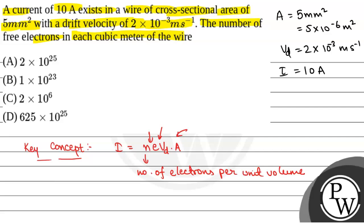We have to find the number of free electrons in each cubic meter. That is, we have to find N. So, N will be equal to I by E into VD into A.